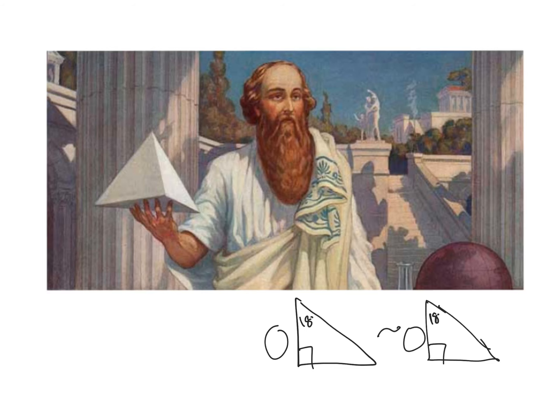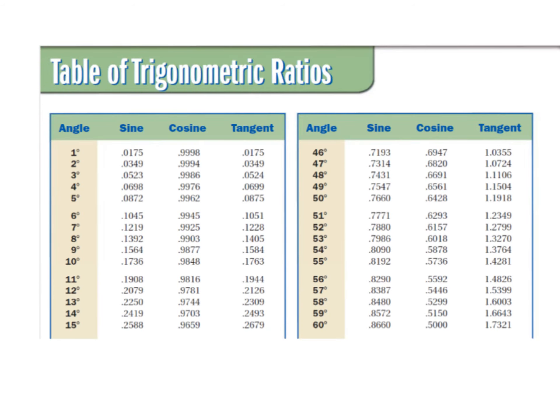They started creating a table of values. For example, for a right triangle with a 10-degree angle, they realized that two of the sides are in a ratio of 0.1736 to 1, two different sides are in a ratio of 0.9848 to 1, and another combination of sides is in a ratio of 0.1763. They compiled all of these and created what are called trig tables.